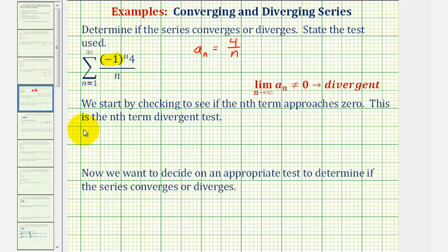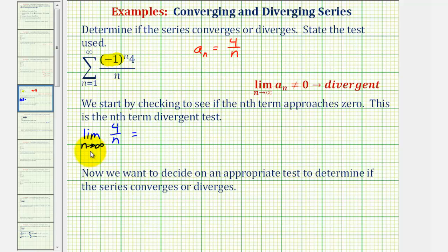So we'll find the limit as n approaches infinity of four divided by n. This limit is pretty straightforward. Notice how for this fraction, the numerator is a constant and the denominator would be approaching infinity, and therefore this would be approaching zero — so this limit is equal to zero.